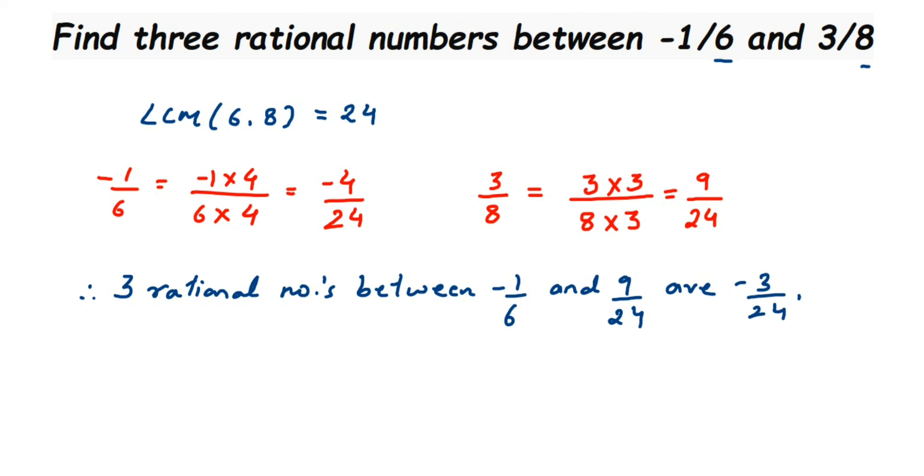You can take minus 2 by 24 or minus 1 by 24, and even you can take 0 by 24 or just only 0, anything. And here I'm gonna take one positive number. Let me take it as 3 by 24. That's it.